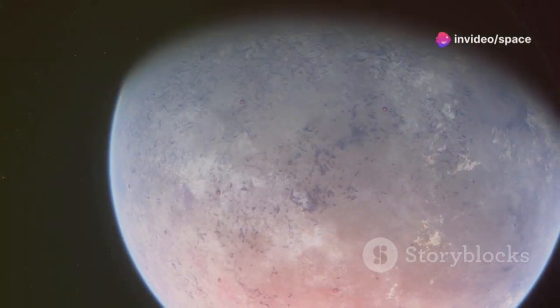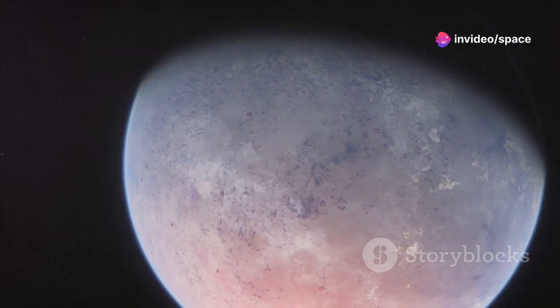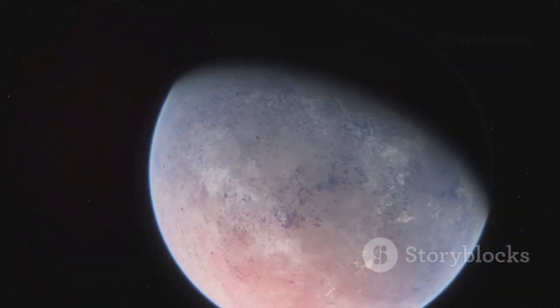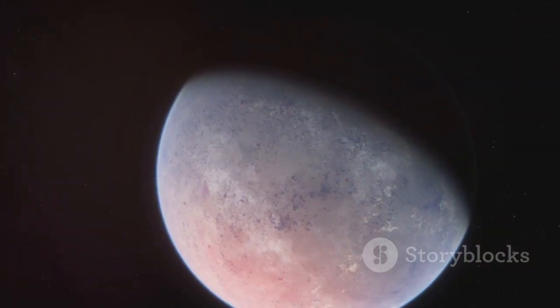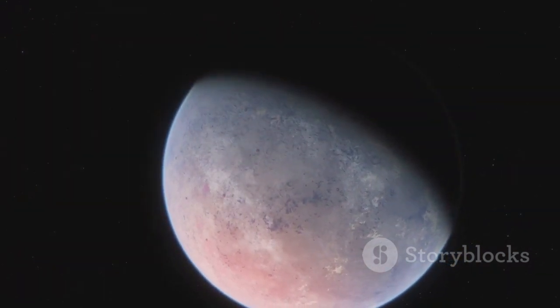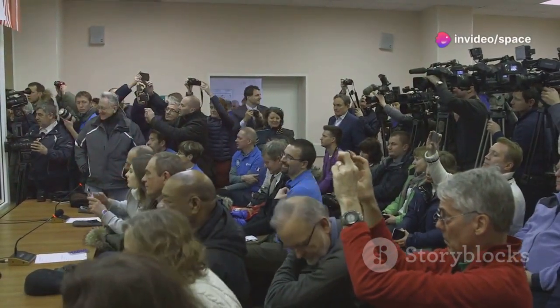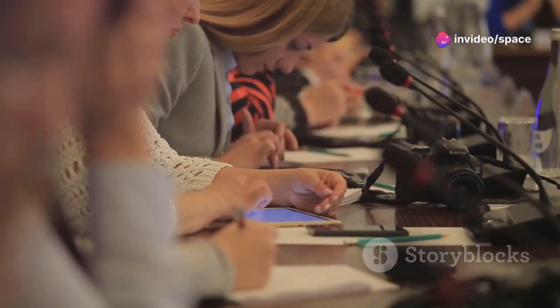So, when Musk announced the detection of artificial lights on Proxima b, the world listened with bated breath. Proxima b, a planet orbiting the closest star to our solar system, has always intrigued scientists. Was this a publicity stunt or a genuine revelation?